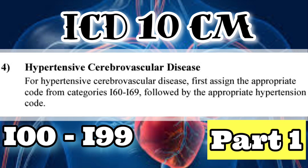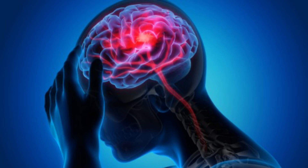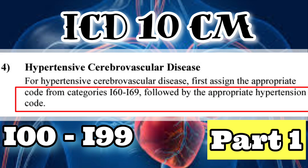The fourth point: hypertensive cerebrovascular disease. If the patient has hypertensive cerebrovascular disease, code the cerebrovascular diagnosis first from the I60 to I69 series, whichever is applicable, and then add an additional diagnosis code for hypertension.